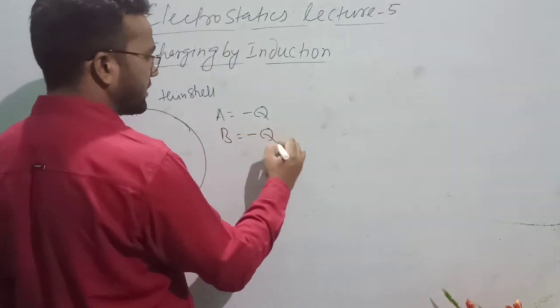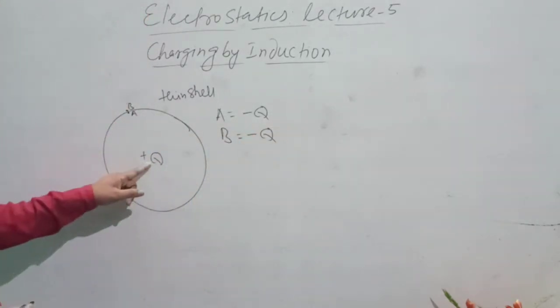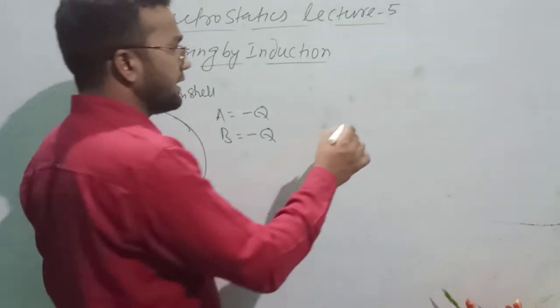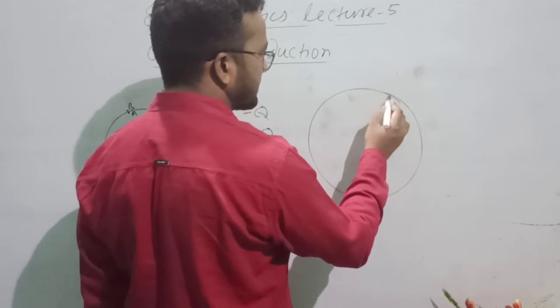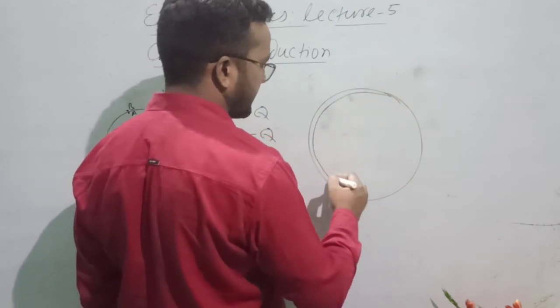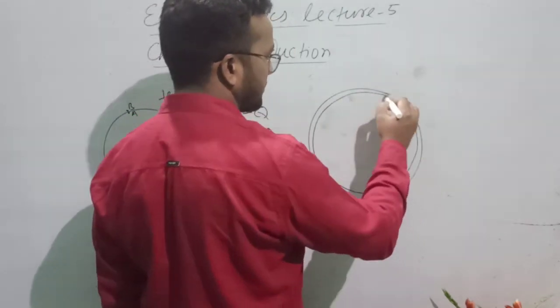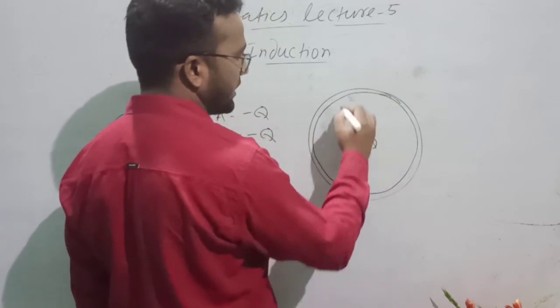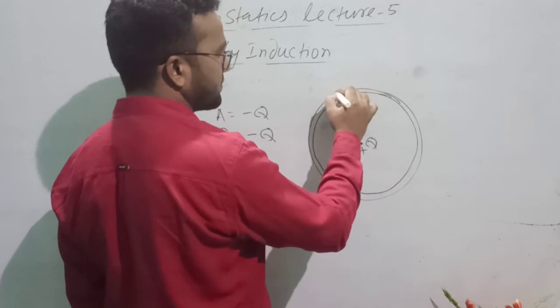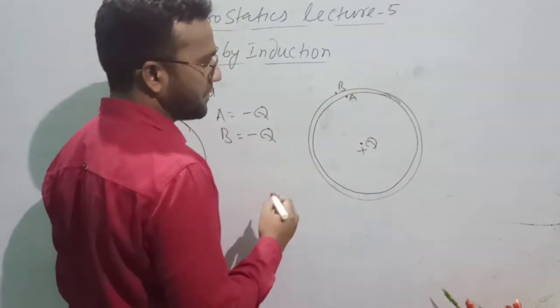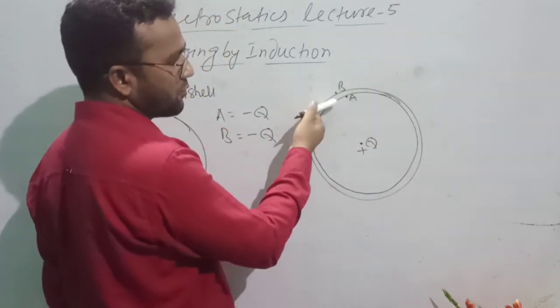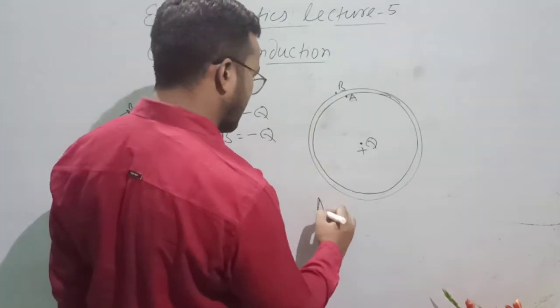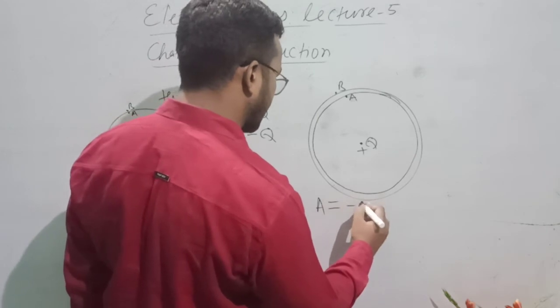On the inner surface is negative Q. Now we have a positive Q. If we have positive Q inside, it will induce negative Q on the inner surface and positive Q on the outer surface.